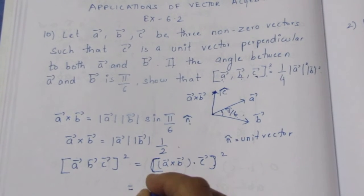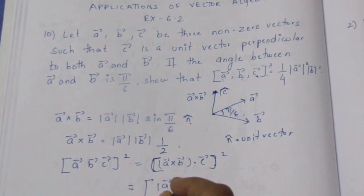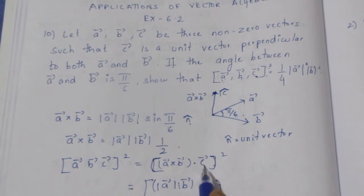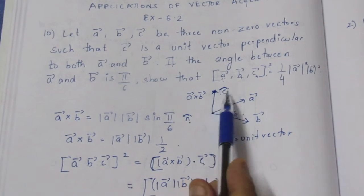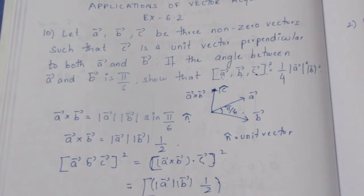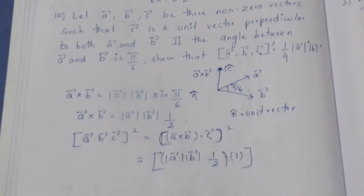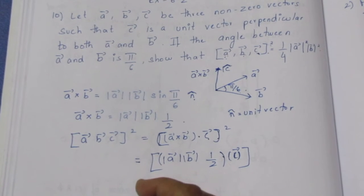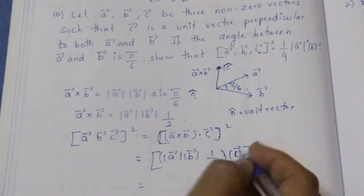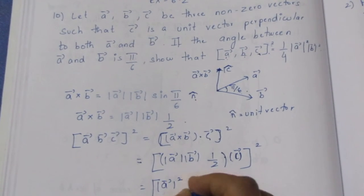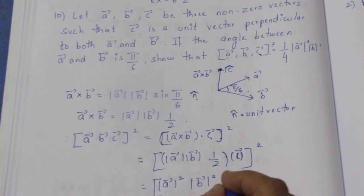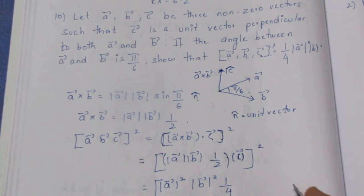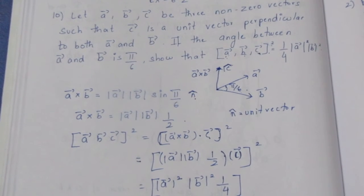Taking the whole square, this is the value: a vector cross b vector gives modulus of a vector times modulus of b vector times 1/2, dotted with c vector. Since c vector is a unit vector, modulus of c vector equals 1. So we substitute this value of c vector.